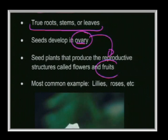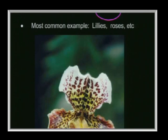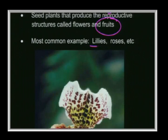Some common examples of angiosperms include orchids, lilies, and roses.